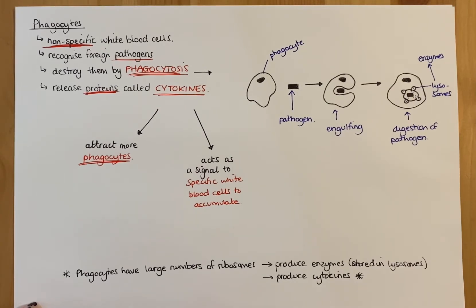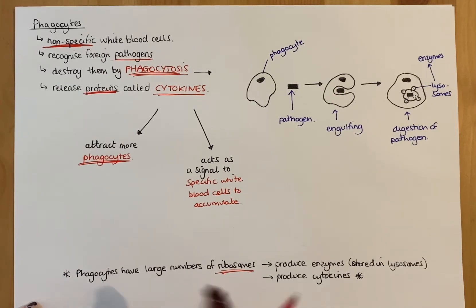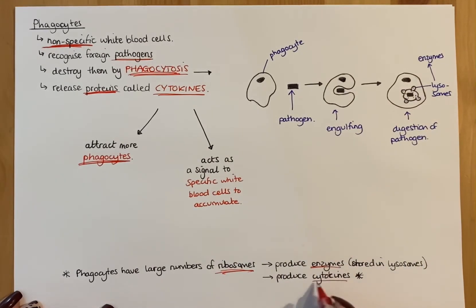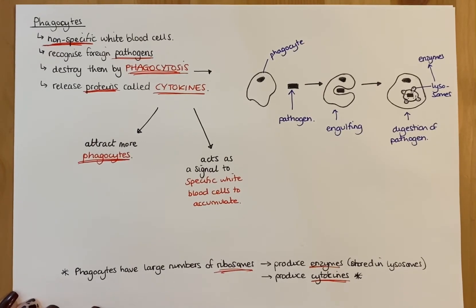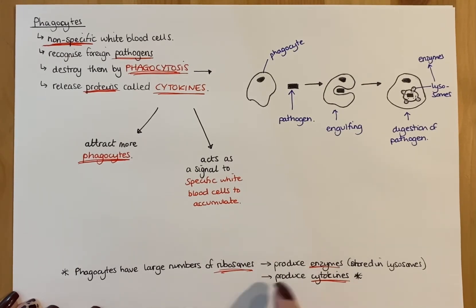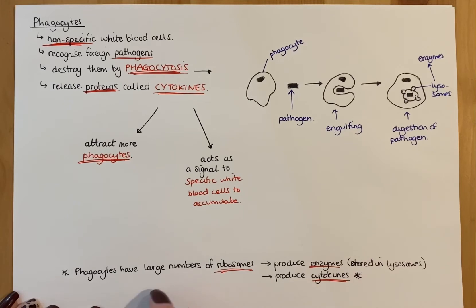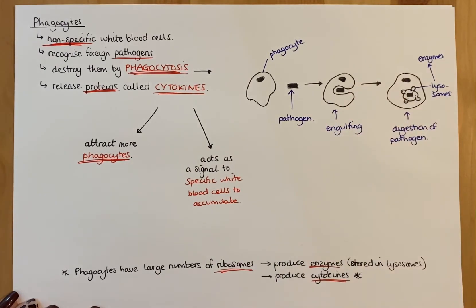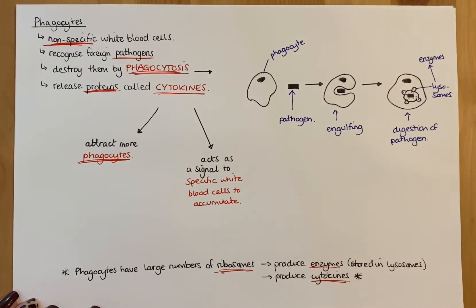One important point: phagocytes have large numbers of ribosomes. A typical exam question might ask you to suggest why - it's because they must produce enzymes stored in lysosomes to break down pathogens, and they also produce cytokines, which are proteins. They might also ask why phagocytes have large numbers of mitochondria: mitochondria produce the ATP required for the production of those enzymes and cytokines. You can also link this to the nucleus, which contains DNA with genes that code for the production of those proteins.